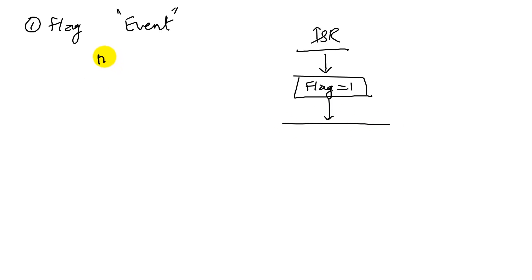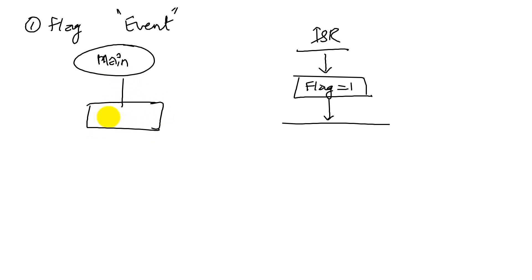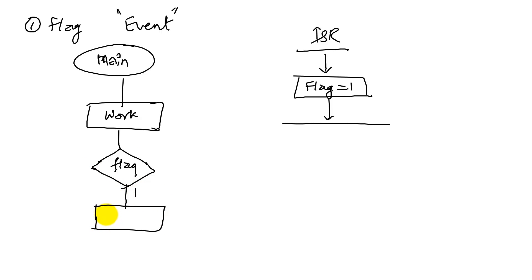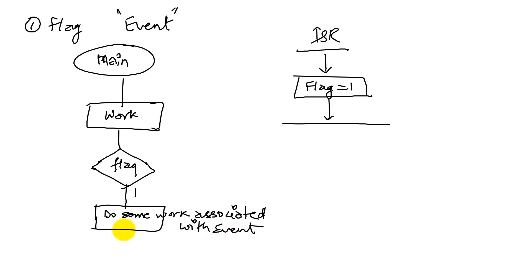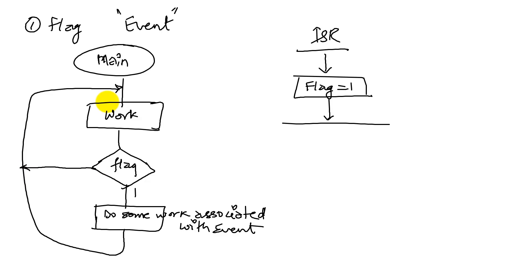The main program, which was doing its main task, periodically checks this flag. If the flag is set to one, it does some work associated with that event. Then it goes back and does its other calculations. On the other hand, if the flag is not set, it goes back and repeats the core work it was designed to do.